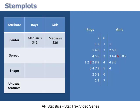With respect to variation, there is more spread among boys. The amount of cash carried by boys ranges from $7 to $73, a range of $66. The amount of cash carried by girls ranges from $11 to $54, a range of $43. With respect to shape, both data sets are roughly bell-shaped, and neither data set has gaps or outliers, so there are no unusual features.